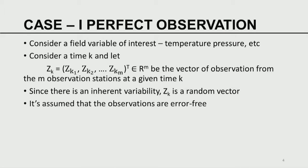I am going to consider two cases in our illustration. First, let us assume the observations are perfect — observations are perfect means there is no noise. Even though we know observations generally have associated noise, it is good to get a grip on the idea by first assuming observations are perfect.